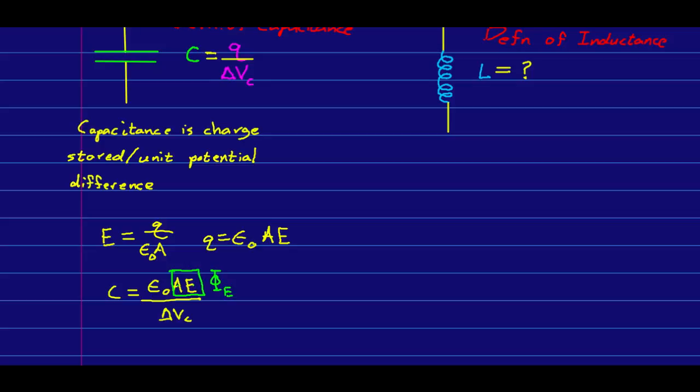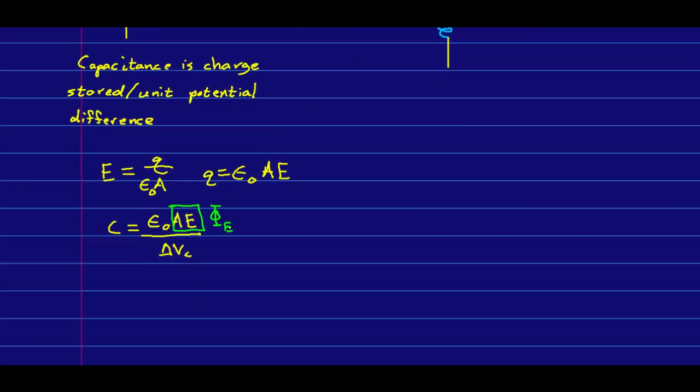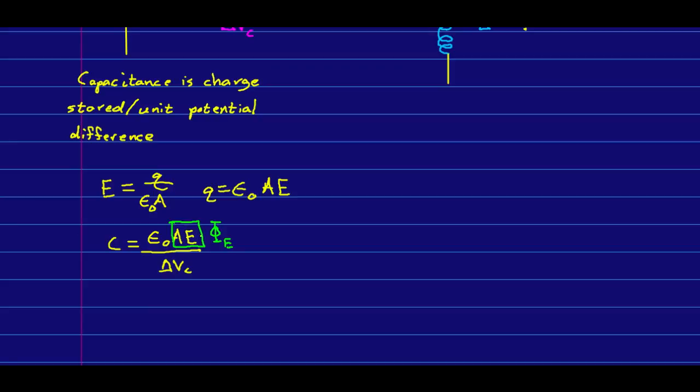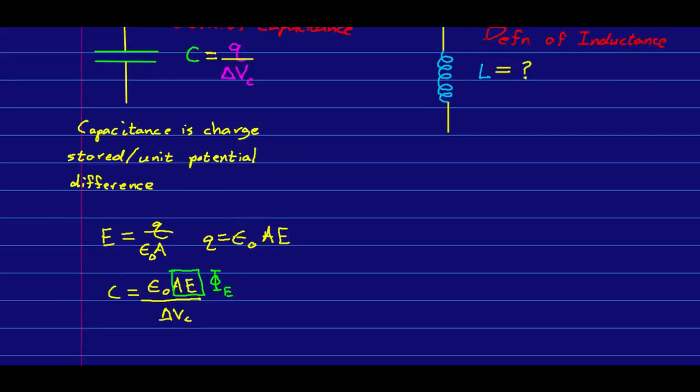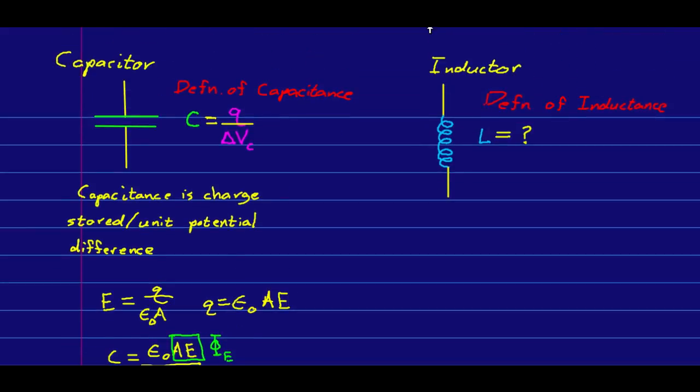And so capacitance could also be written this way. But this quantity right here is the electric flux inside the capacitor. And so you could, other than this constant of epsilon naught here, look at capacitance as stored electric flux per unit potential difference across the capacitor. I don't really know why you would define it that way. It's not a particularly convenient definition, but there's nothing wrong with such a definition.